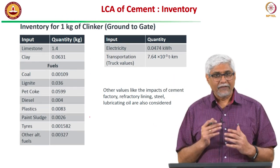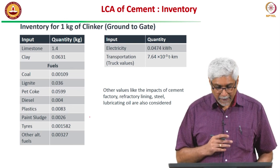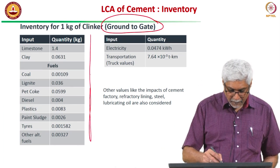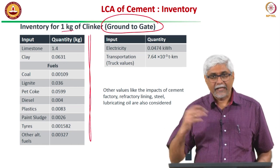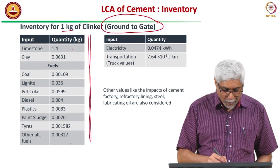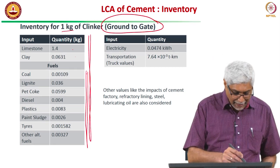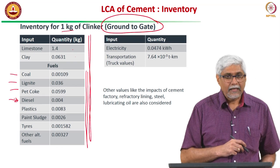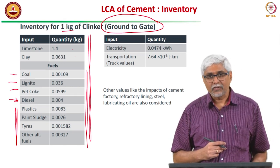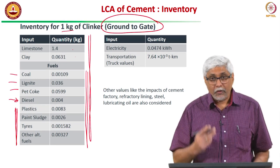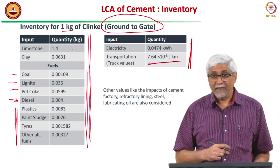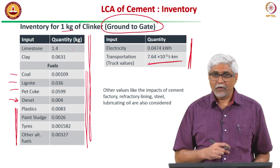After compiling the list, we look at the inventory — quantities for each material in the ground-to-gate system, from the mine to the gate of the plant. We get quantities of how much limestone, clay, and fuels are required per kilogram of clinker. Besides coal, lignite, and pet coke, the plant also uses alternative fuels — waste plastics, paint sludge, tyres — in the kiln for clinkering. We also account for electricity and tonne-kilometres of travel for all raw materials.